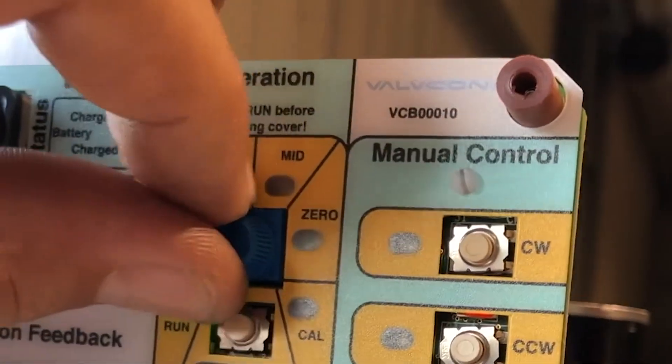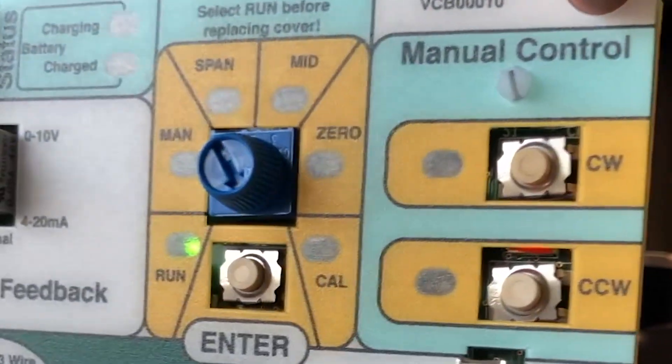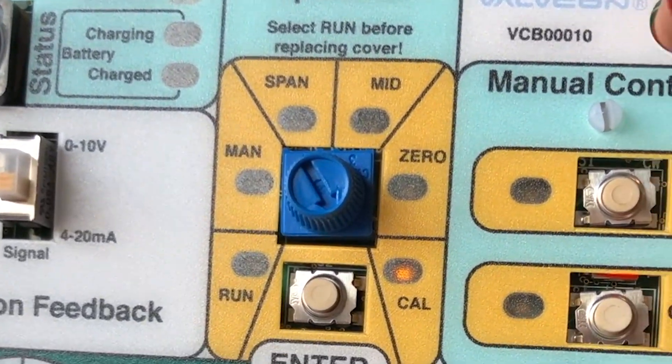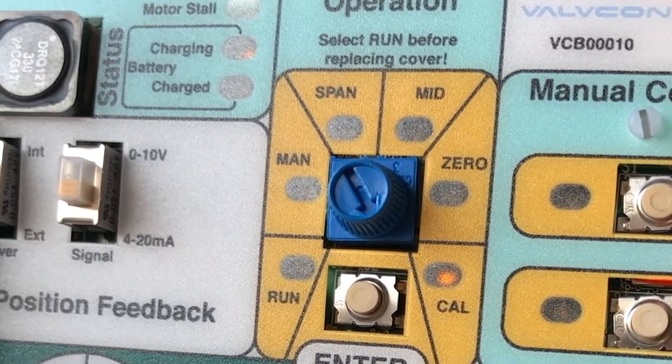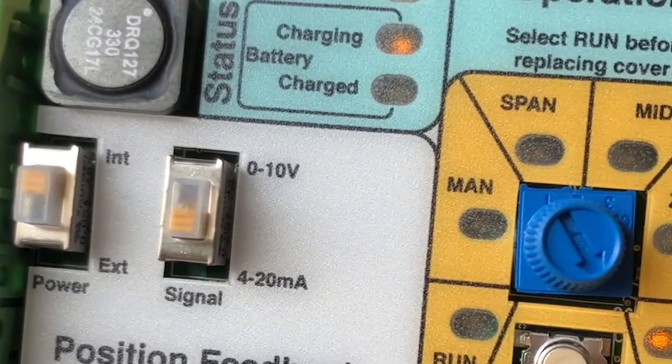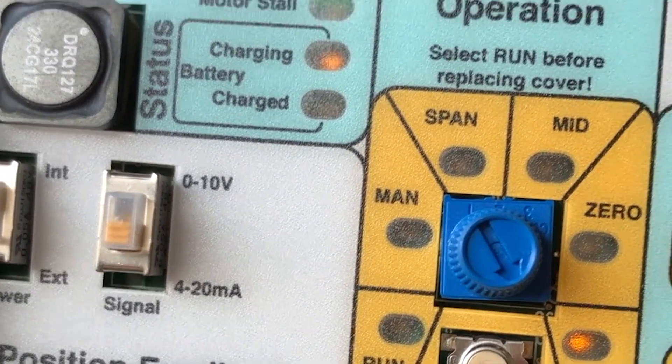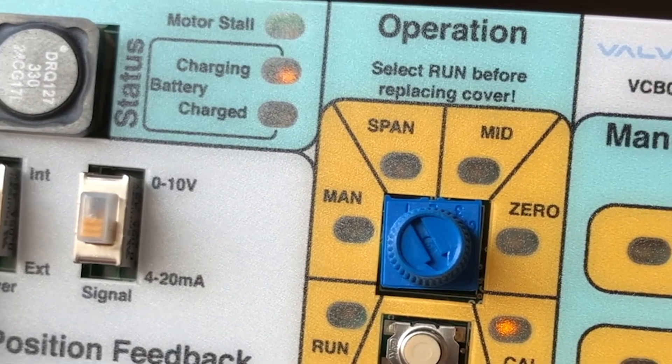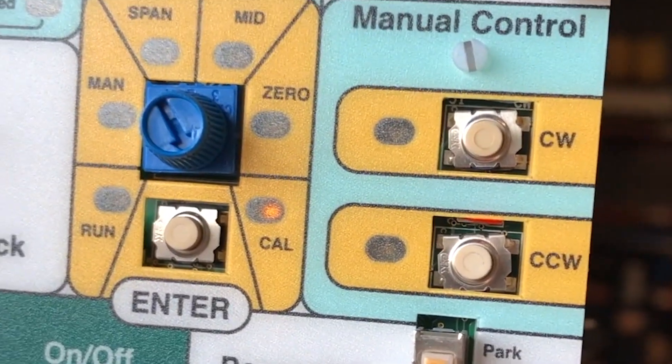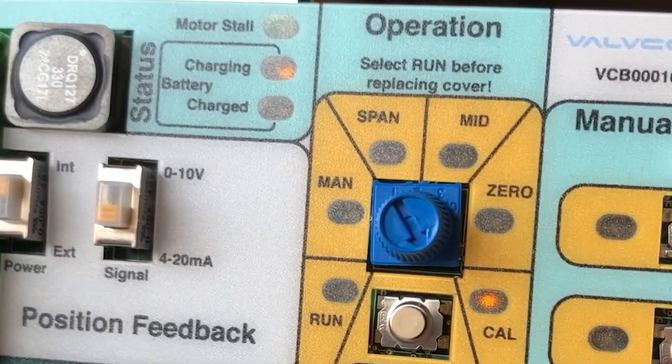Next we'll apply our source power. Turn the board on. When the board powers up you get two status indication lights. One is your calibration LED and the second is your charging indication LED.